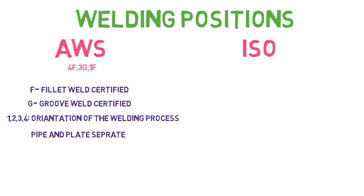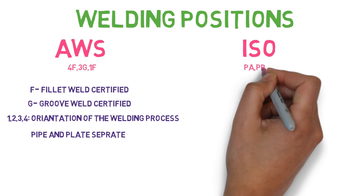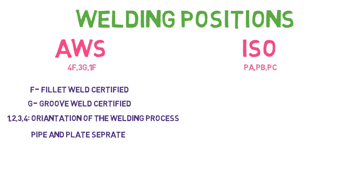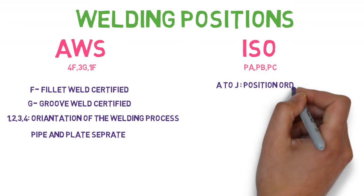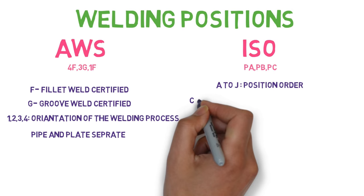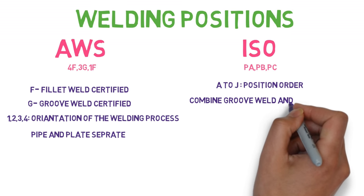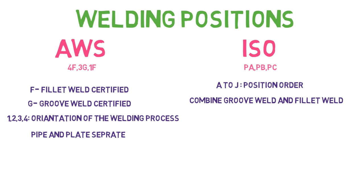For ISO, positions are like PA, PB, PC. Here P means position and they are categorized in alphabetical order A to J. Also in ISO, the positions are combined — groove weld and fillet weld. So there is no separate positions for groove weld and fillet weld; they are combined.